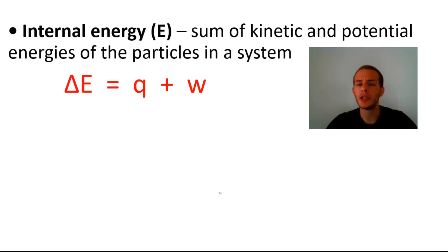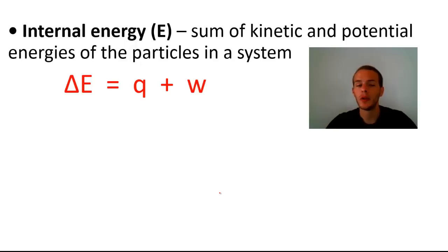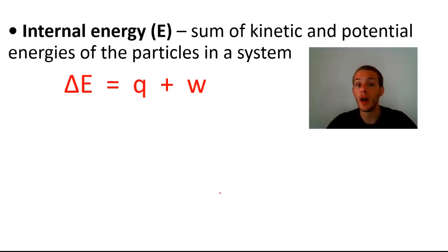The two ways by which internal energy can flow between a system and its surroundings are through heat, labeled Q, and through work, denoted W. So we get the equation where the change in internal energy is equal to the sum of the heat transferred and the work done between the system and its surroundings.